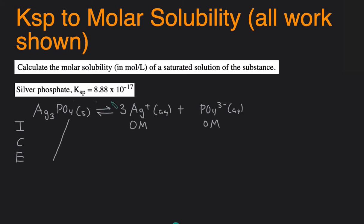Then this reaction will proceed to the right. So the concentration of silver is going to increase. It can be plus 3X and the concentration of phosphate will be plus X. Then the E line is the sum of the I and C line. So zero plus 3X is 3X and then this will be X.